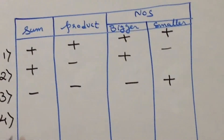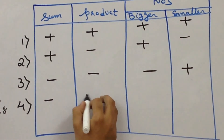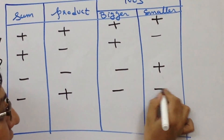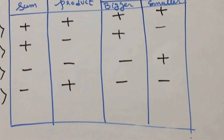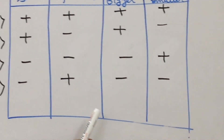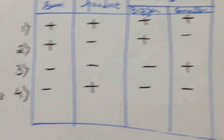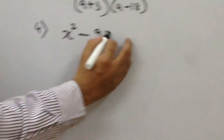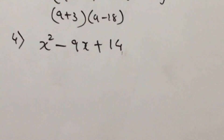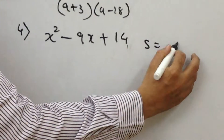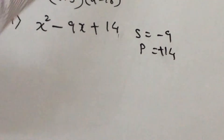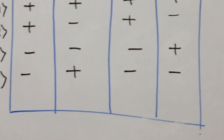The last probable outcome — the fourth one — is where the sum is minus but the product is plus. When sum is minus and product is plus, both the numbers have to be minus, whether it's the bigger or the smaller. Let's take an example: x squared minus 9x plus 14. The sum is minus 9 and the product is plus 14. Both the numbers will be minus.